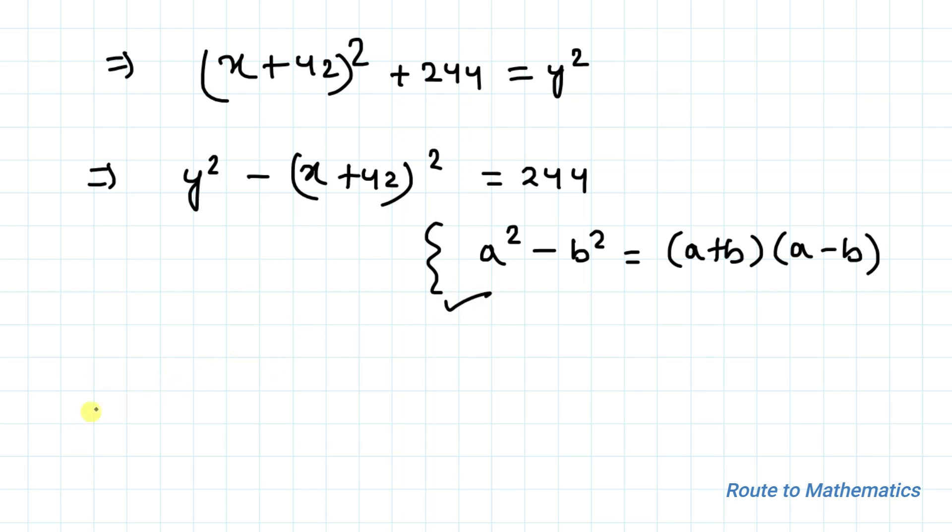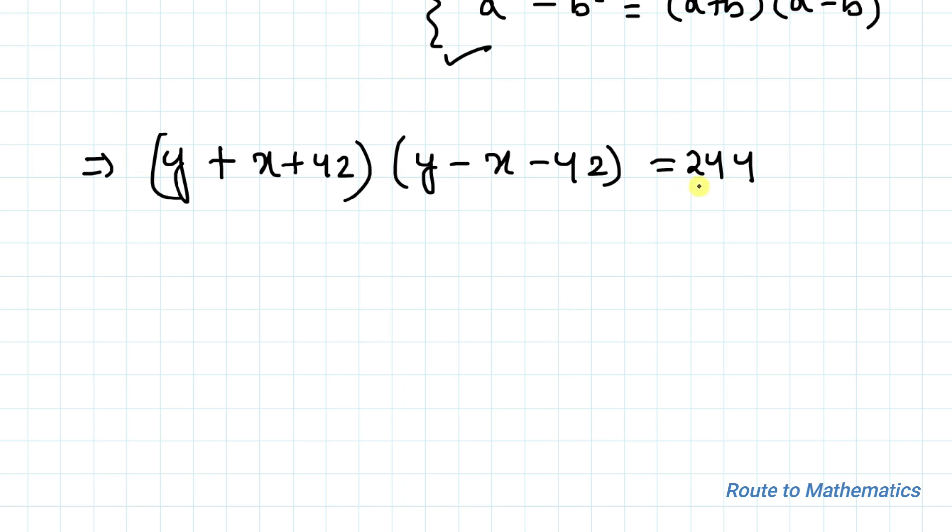Applying this algebraic identity, we can write y plus x plus 42 multiplied with y minus x minus 42 equals 244. The value of y plus x plus 42 and y minus x minus 42 must be factors of 244. So let's find the factors of 244.